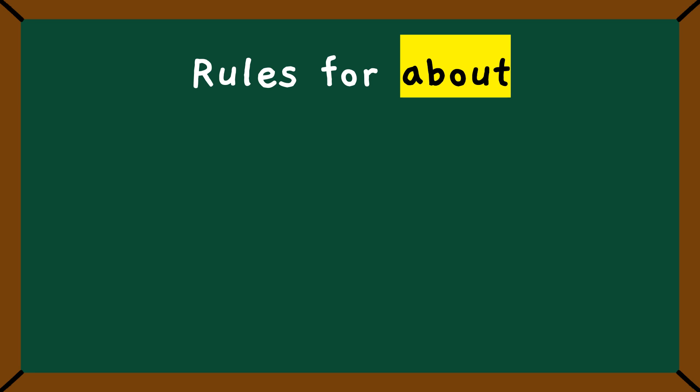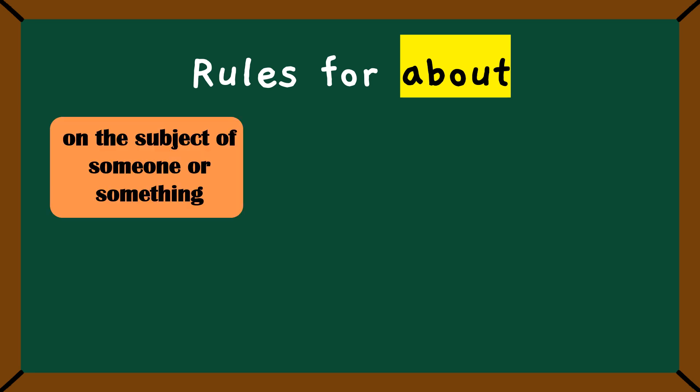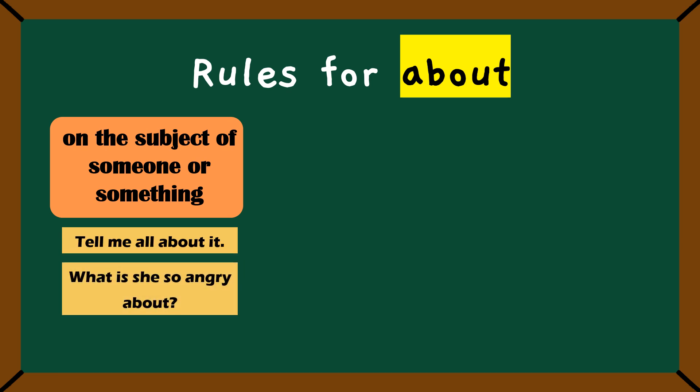Lastly, let's learn the rules for about. My dear children, about is a very important preposition because we use about to talk about topics, reasons or even purposes. Let's see some examples with few rules. First rule: about can tell us what the subject is. For example, tell me all about it. You want to know everything related to the subject. Or, second example: if I say, what is she so angry about? I am asking for the reason. Why is she feeling that way? I want to know about my subject.